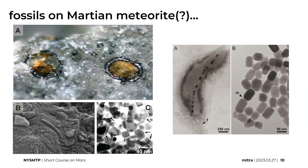The ALH84001 Allen Hills meteorite really revamped our interest in Mars and life on Mars. There was a period after Viking gave very negative results for life — based on the biology experiments there was no sign of life — so Mars funding dried up. But then we got this meteorite and more people started thinking about life on Mars. There was a revamped enthusiasm for understanding life and the potential for habitability on Mars.